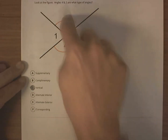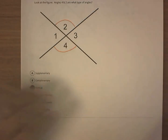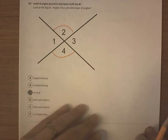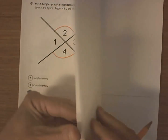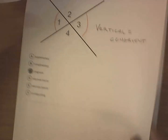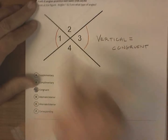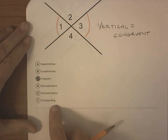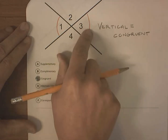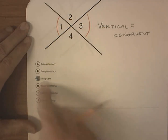Let's look at angles 2 and 4. Those are vertical angles. Now let's look at angles 1 and 3. 1 and 3 are also vertical angles. Notice vertical isn't an option here, but they are congruent because verticals are congruent, so I went with congruent on that one.